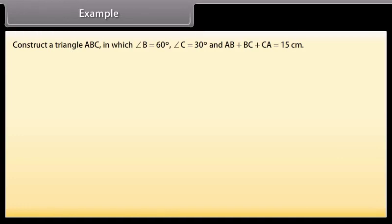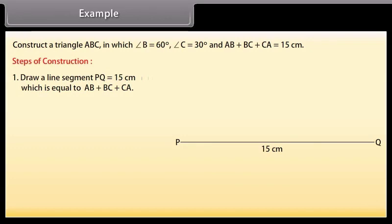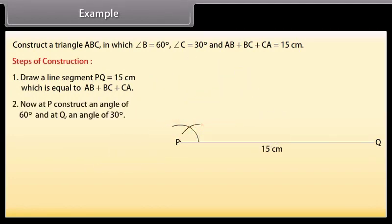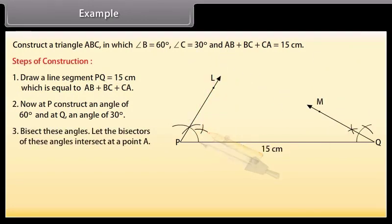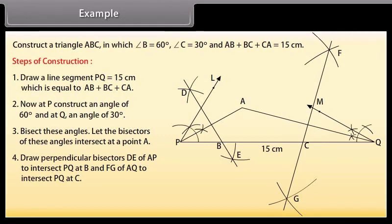Example: Construct a triangle ABC in which angle B is 60 degrees, angle C is 30 degrees, and AB plus BC plus CA equals 15 centimetres. Steps of construction: Draw a line segment PQ equal to 15 centimetres, which equals AB plus BC plus CA. At P construct an angle of 60 degrees and at Q an angle of 30 degrees. Bisect these angles. Let the bisectors intersect at point A. Draw perpendicular bisectors of AP and AQ to intersect PQ at B and C. Join AB and AC. Then ABC is the required triangle.